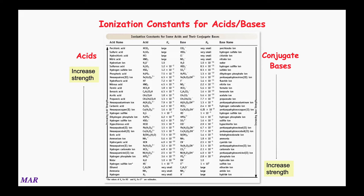Then you have a whole bunch of weak acids going from biggest Ka to smallest Ka. Sulfurous acid H₂SO₃ has Ka = 1.2 × 10⁻², and as you go down you see 10⁻⁴, 10⁻⁵ — Ka's are getting smaller. As K gets bigger you have more product, and more product for an acid means more hydronium. So as Ka gets bigger you have a stronger acid. The strongest acids are in the upper left corner and get weaker as you go down.